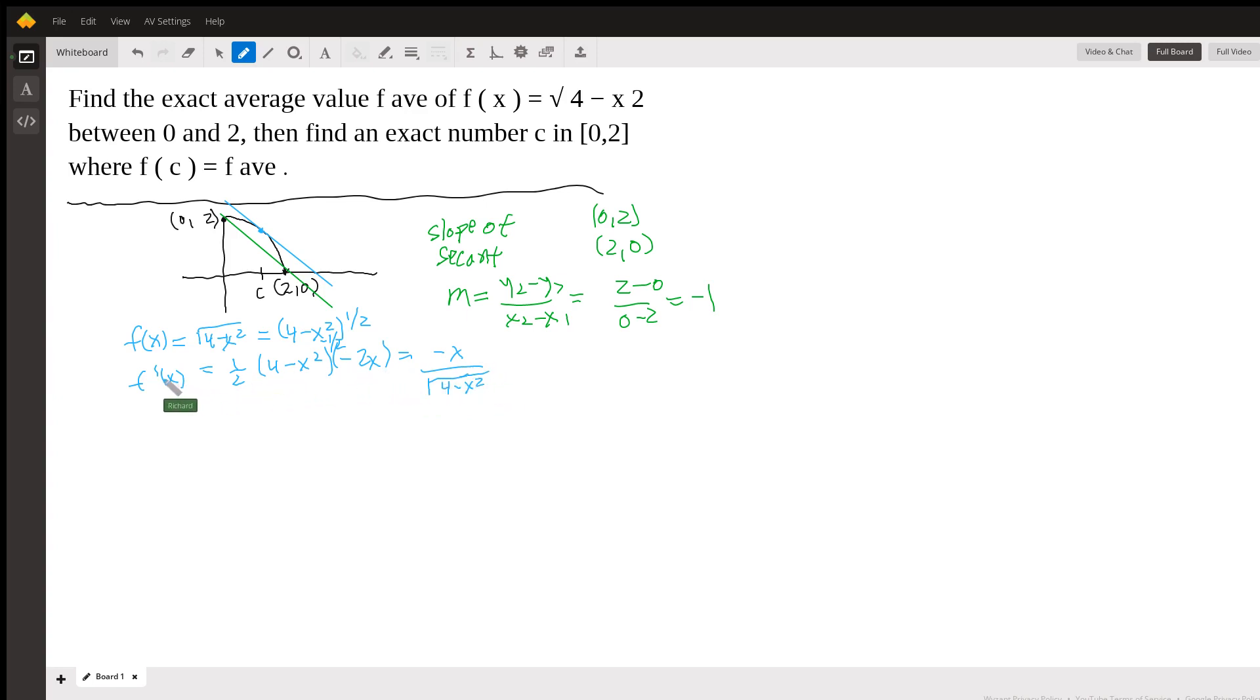Well, that's the slope of the tangent line at x. And we want that slope to be the same as the slope of the secant line. So, we set that to negative 1. And then, we're going to get x equals the square root of 4 minus x squared. And now, we're going to square both sides. x squared equals 4 minus x squared. And then, the next step would be bring over the x squared. You're going to get 2x squared equals 4. And then, x squared equals 2.